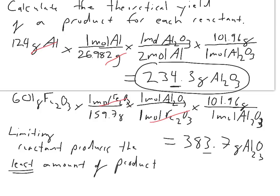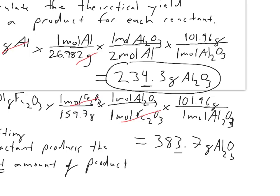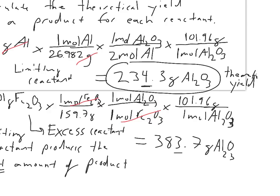This is the theoretical yield because it produced the least amount. This is the limiting reagent or reactant. What that means for the Fe2O3 - by default, it is the excess reagent or reactant. You have plenty of it.